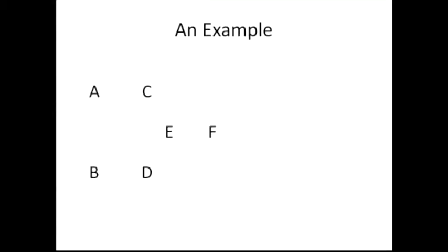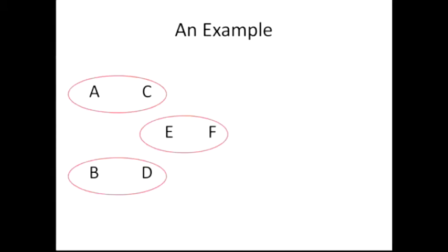This is the example we'll be working with for basically the entire talk. It's a really nice, simple example: we have a set of six states of the world, A through F. We can think about partitions. The red player has a partition where their signal tells them either the state is A or C, or the state is E or F, or the state is B or D — but they can't tell the difference between E and F, or between B and D.